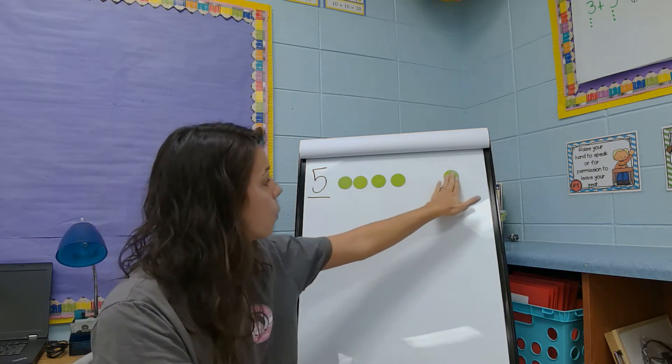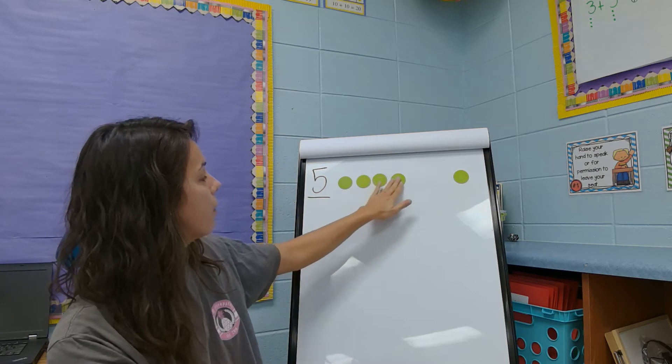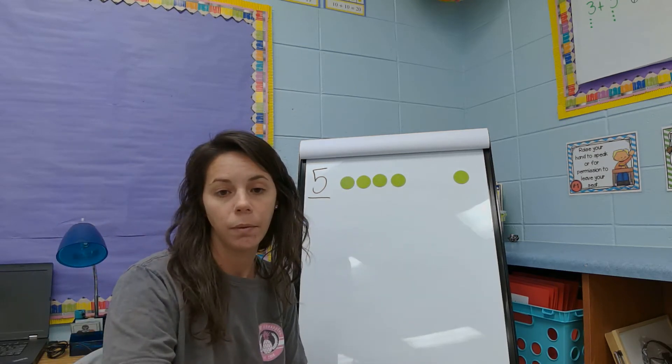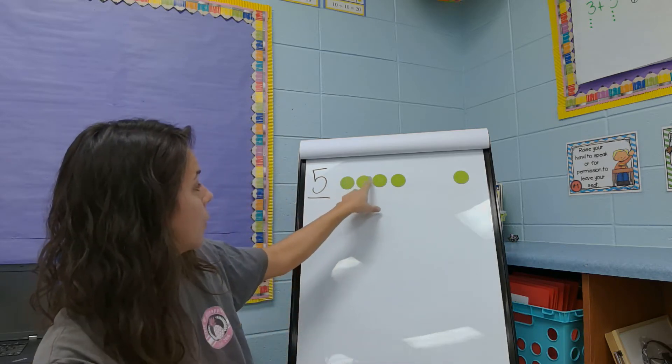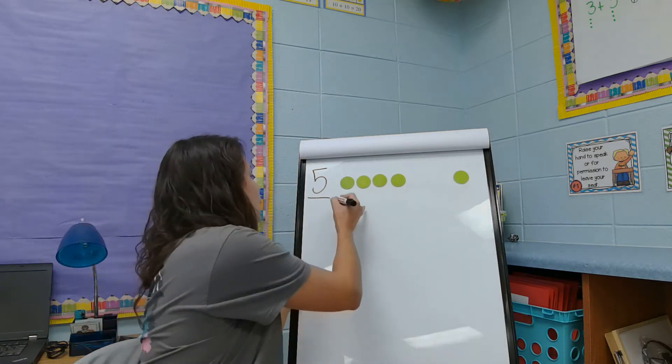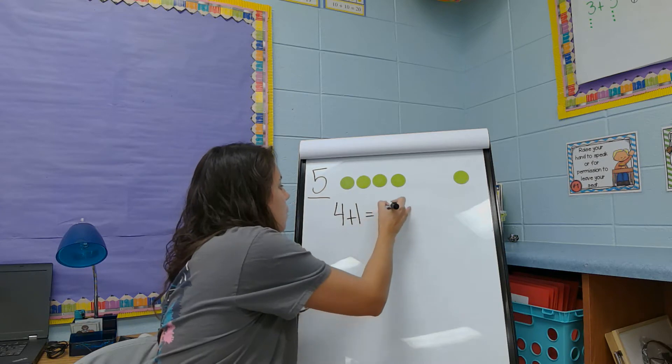So what if I pull one dot over here? Now I have four. Good. One, two, three, four, and one more. So we're going to write that question. Four plus one equals five.